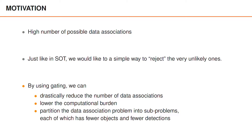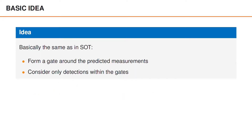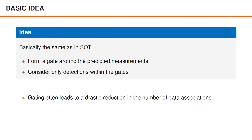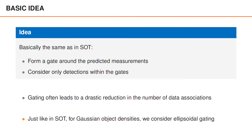We can also partition the data association problem into smaller subproblems, such that each subproblem has fewer objects and fewer detections. The fewer objects and detections, the fewer the valid data associations are, and dealing with the data associations becomes computationally cheaper. The basic idea when we have n objects is the same as with a single object: we form a gate around each predicted measurement and consider only detections within the gates, which can often lead to a drastic reduction in the number of associations.